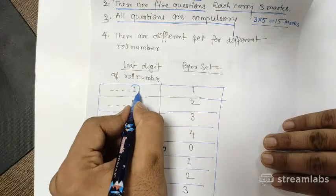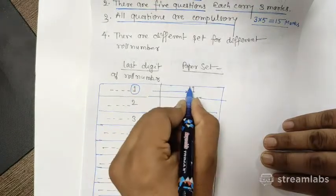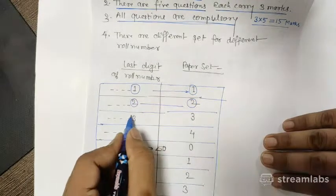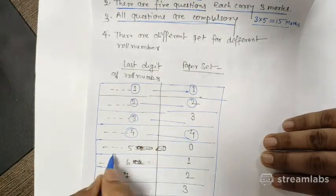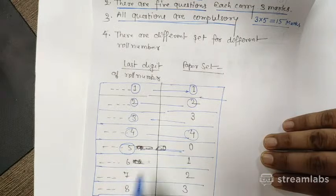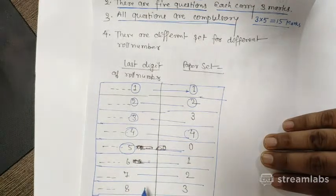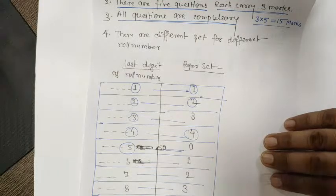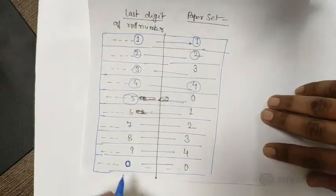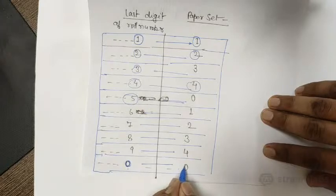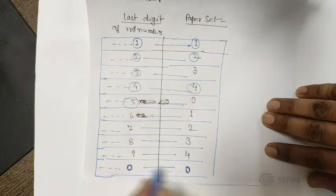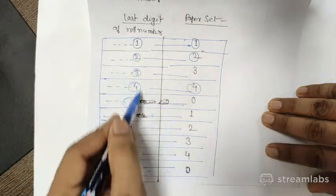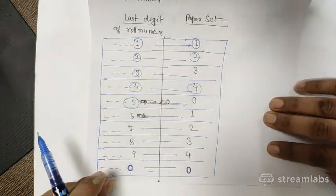If the last digit of your roll number is 1, choose set 1; if it is 2, choose set 2; for 3, set 3; for 4, set 4; for 5, set 0; for 6, set 1; for 7, set 2; for 8, set 3; for 9, set 4; and if the last digit is 0, choose question paper set 0. This is how you select your question paper set.